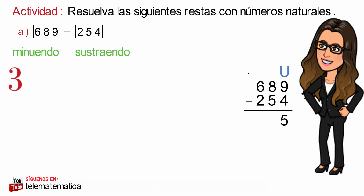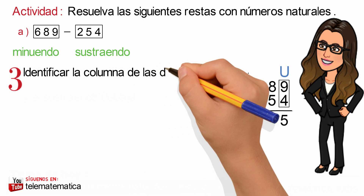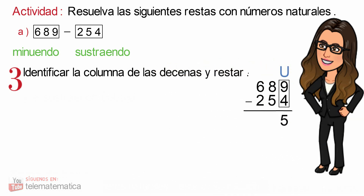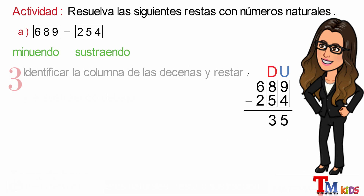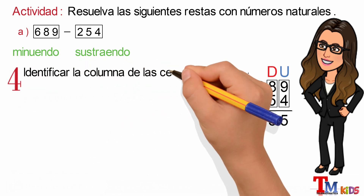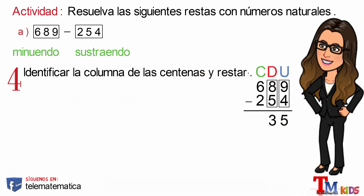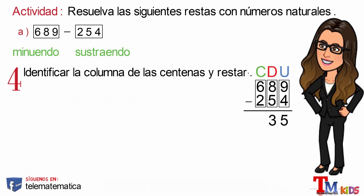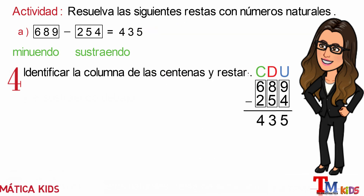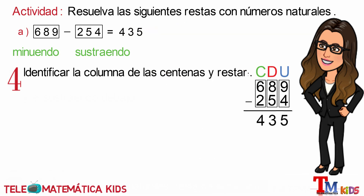En tercer lugar, identificar la columna de las decenas y restar: 8 menos 5 es igual a 3. Y en cuarto lugar, identificar la columna de las centenas y restar: 6 menos 2 es igual a 4. Este resultado lo escribimos en la operación: 689 menos 254.